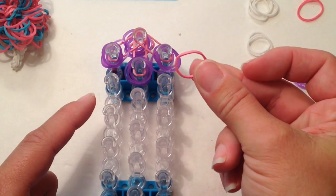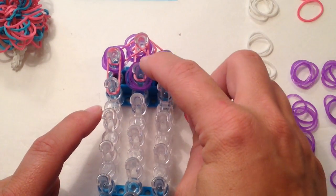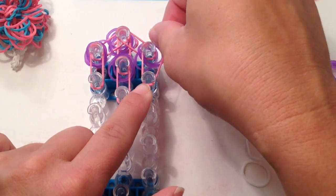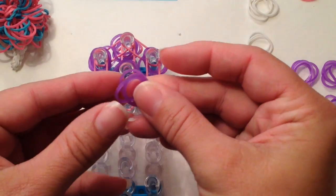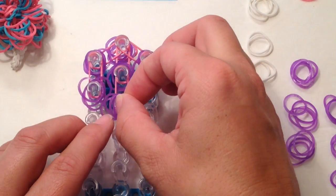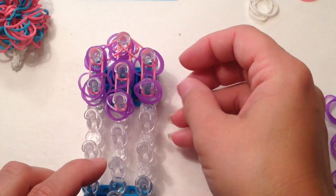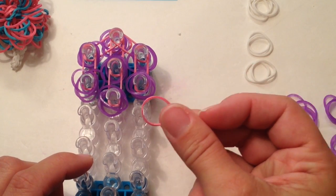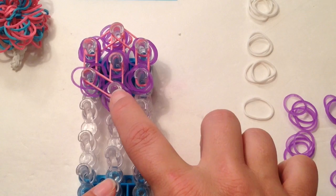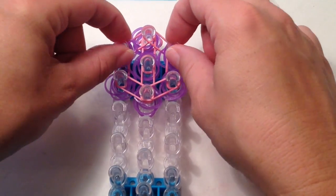Our next step is going to be to take a single pink band and go from left 1 to left 2. A single pink band from center 2 to center 3. A single pink band from right 1 to right 2. Now we need to go back to our fluffy color, and we're going to add 4 bands on left 2, 4 bands on center 3, and 4 bands on right 2.